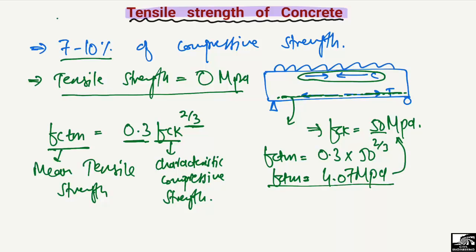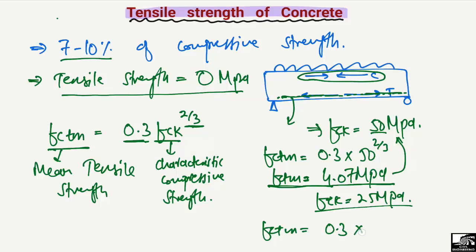This 4.07 MPa is really low compared to the 50 MPa compressive strength, but it should be considered in design if we do not want to ignore the tensile strength. Similarly, for fck of 25 megapascals, the tensile strength is 0.3 multiplied by 25 to the power of 2/3, giving 2.56 megapascals.